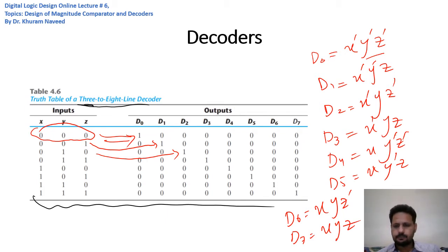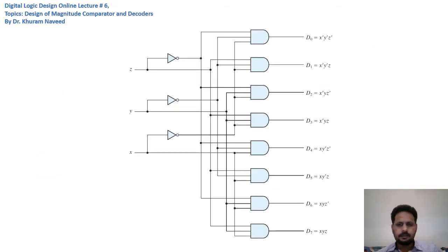We can make a very simple circuit that could implement the functionality described in this three-to-eight line decoder, which is given here. I've taken it from your book. There is nothing much to explain here - each of these AND gates implements a min term corresponding to a certain output, and the expression is already written here.